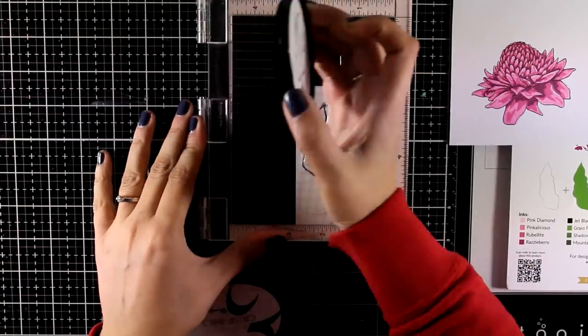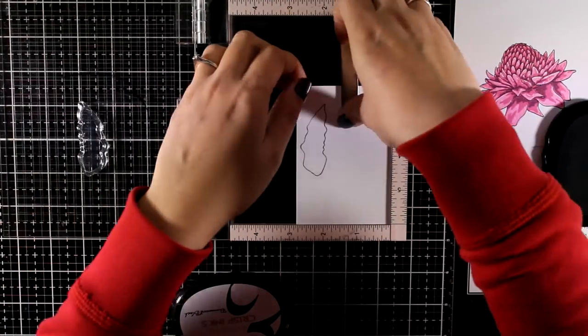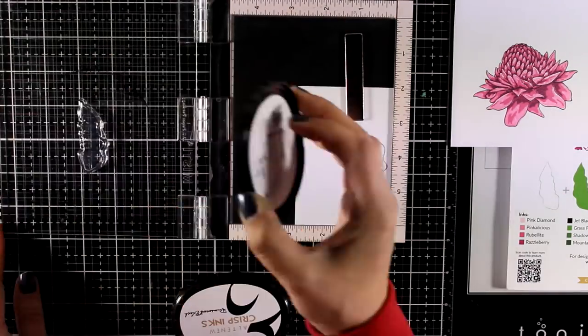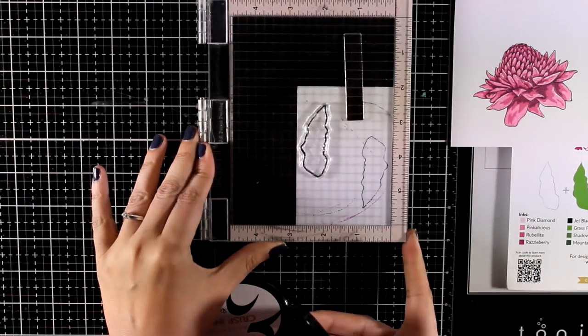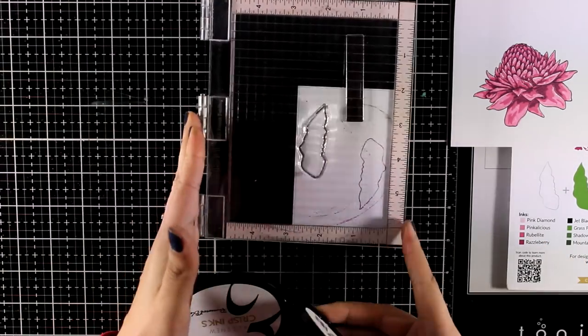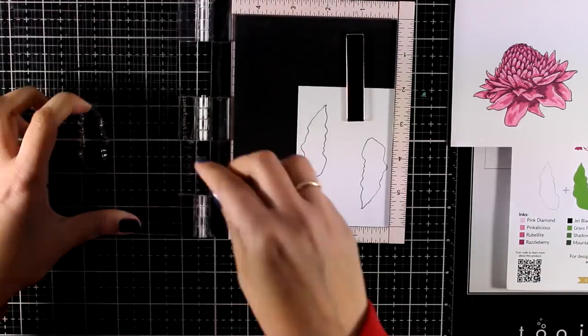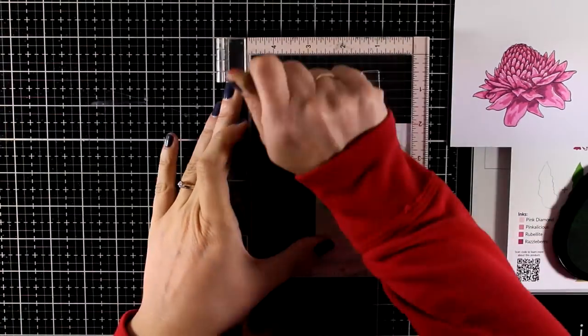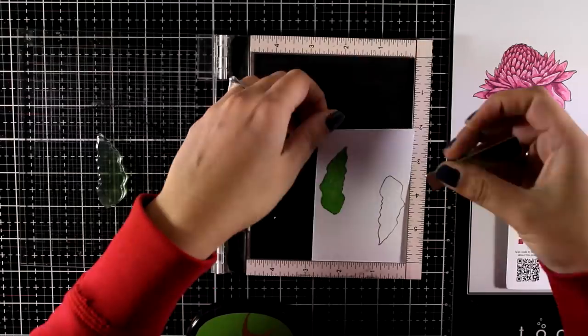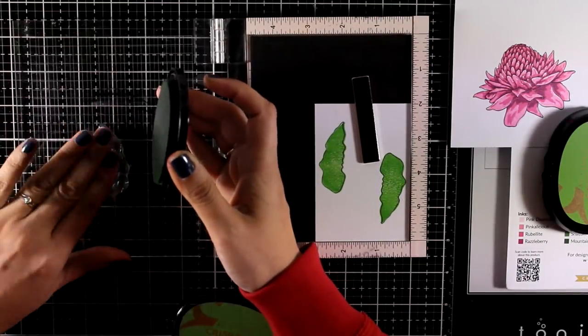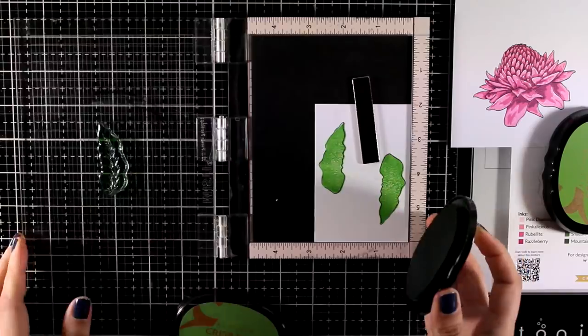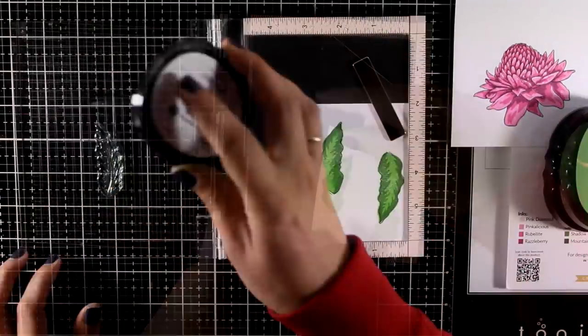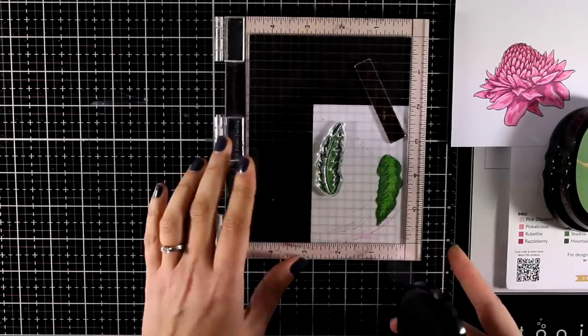Now I'm going to need two leaves for my focal point. I first stamped with permanent black ink the outline, then I'm moving on to stamp the three layers. For the first one I went with grass field. The second layer is stamped with shadow creek. And the third and deepest color is mountain pine. Just like always, you'll find everything linked below.